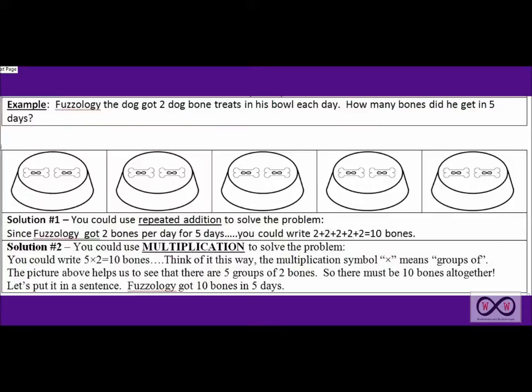For the example we had Fuzzology the dog got two dog bone treats in his bowl each day. How many bones did he get in five days? We have some important clue information there. We have two dog bone treats that Fuzzology got each day. So that's each day.